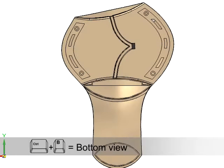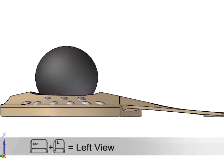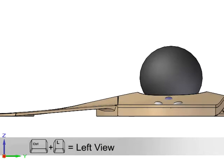Likewise, CTRL+B will change to the bottom view. CTRL+L presents your left view, and you guessed it, CTRL+R will show the right view.